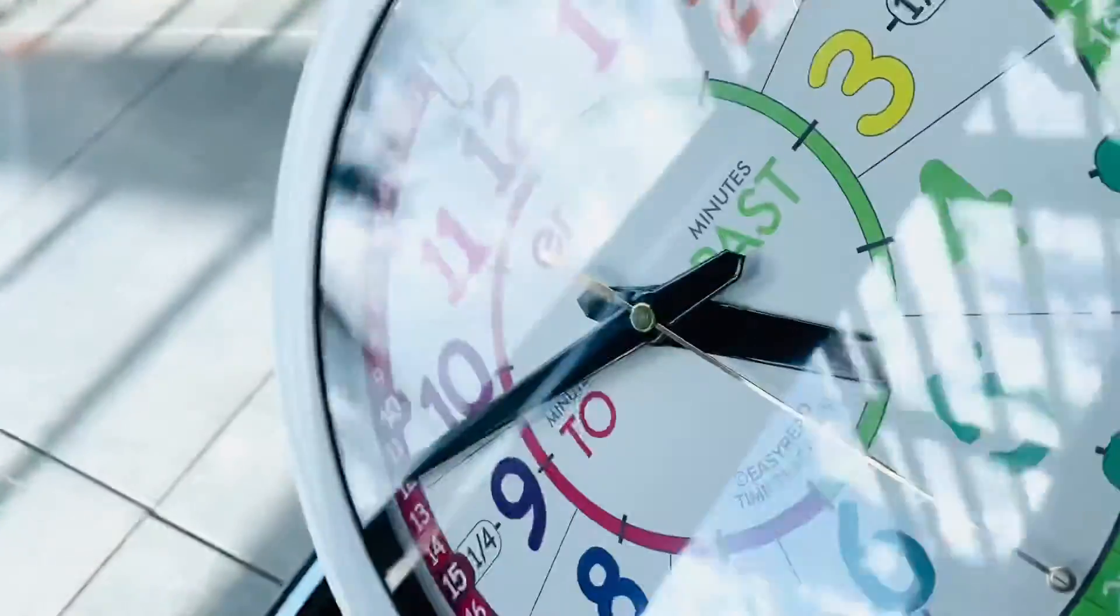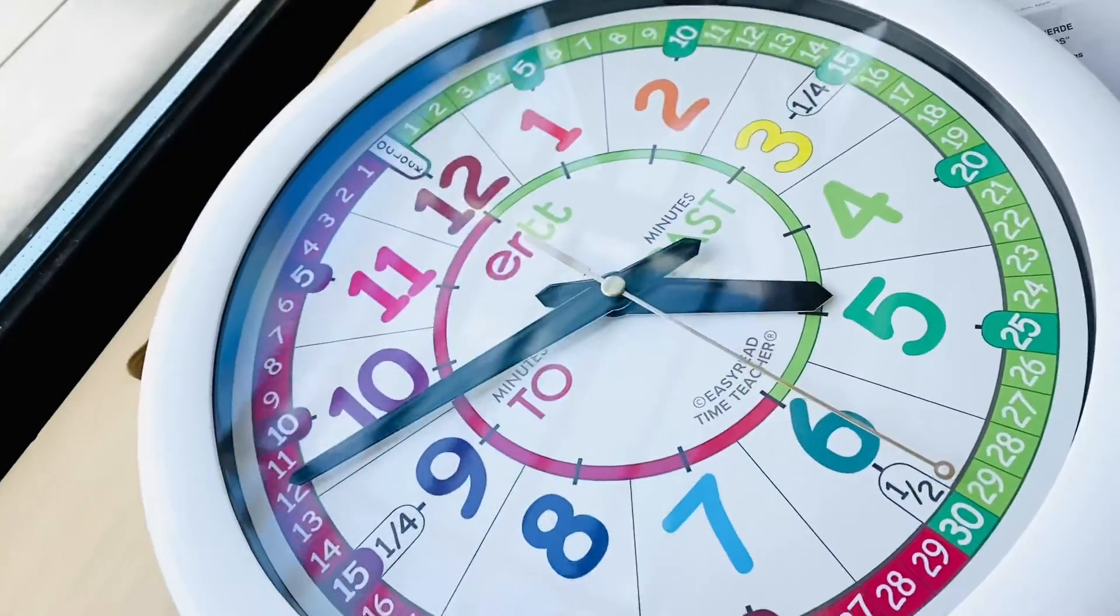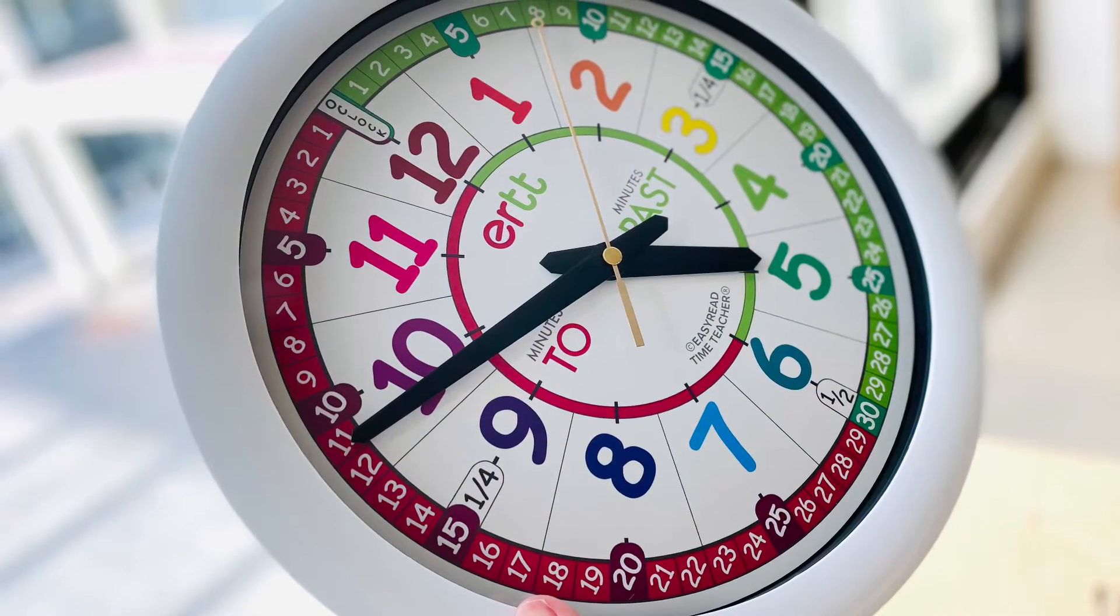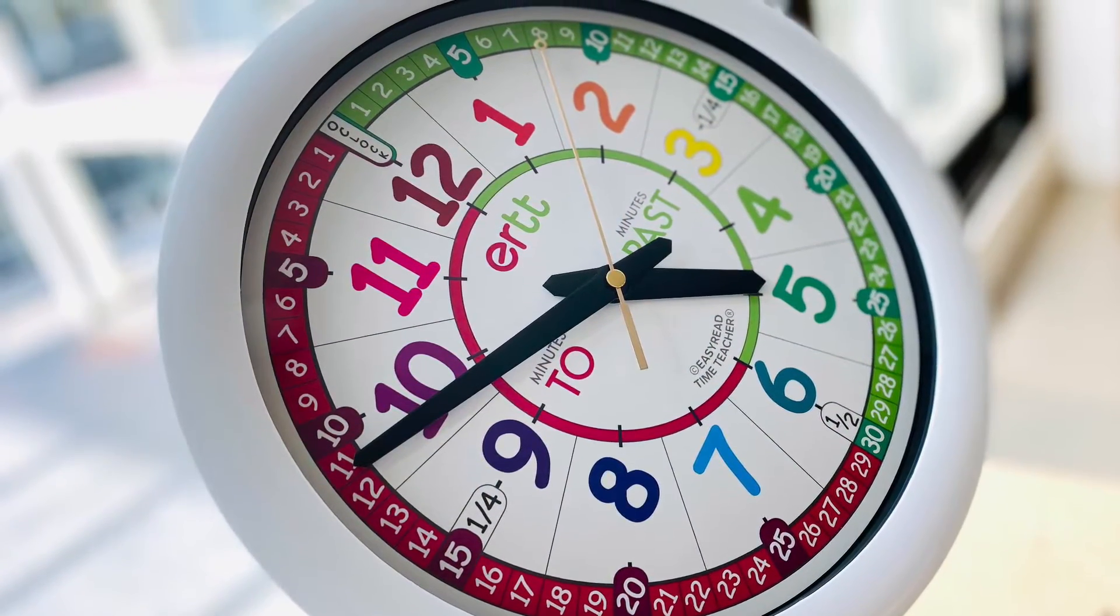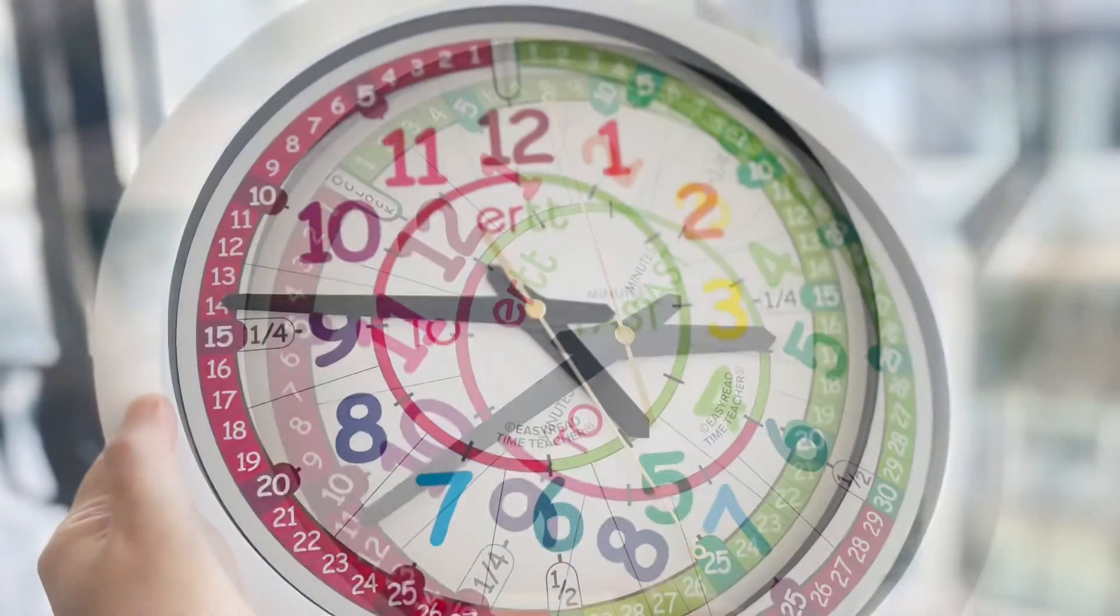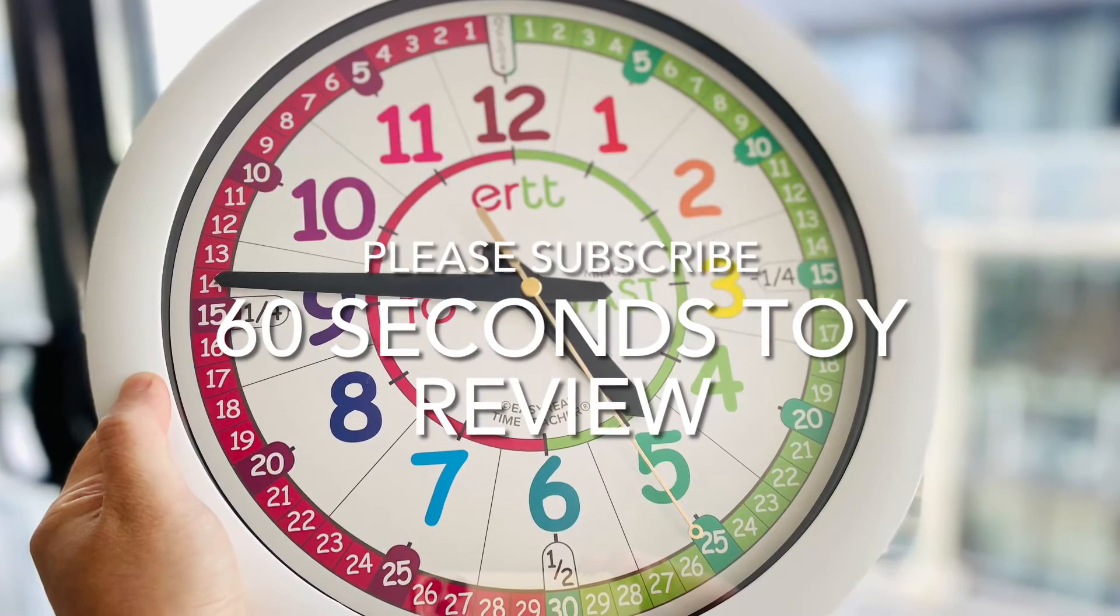Number 2: I love how silent this clock is without any distracting ticking sound. Number 3: I love the 12 major numbers are in exciting rainbow colors against a white background. Number 4: The clock can be mounted on a wall as a regular clock, but it's also light enough to be held in hands as a learning tool.